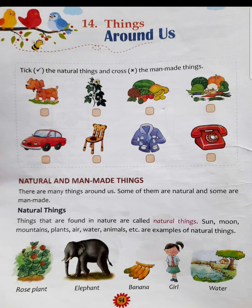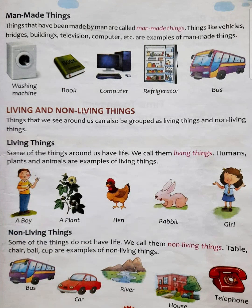Now come to book page number 95. The next section is man-made things. Things that have been made by man are called man-made things. Jo cheezein insaan ne banayi hain, jinko man ne banaya hai, unhe hum man-made things kehte hain.